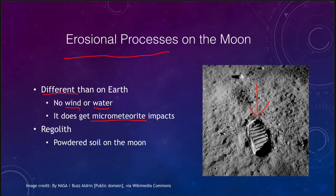The astronauts' footprints will eventually wear away, but it can take millions or tens of millions of years for micrometeorites to slowly repulverize that material and churn it up. So eventually these will disappear, but if we go back to the moon in the next few hundred years we will still see the astronauts' footprints much as they were left in the 1960s and 1970s.